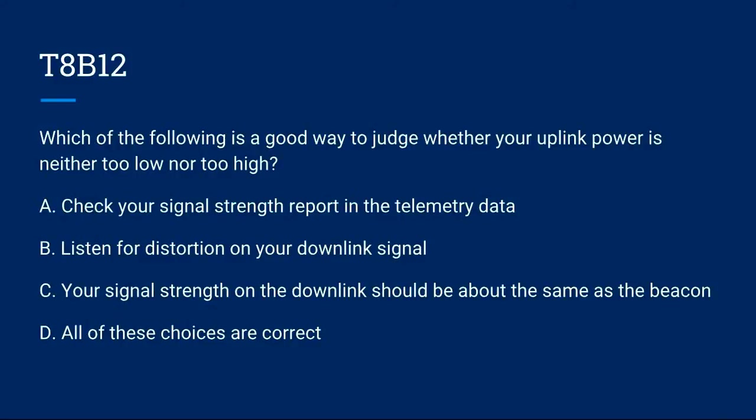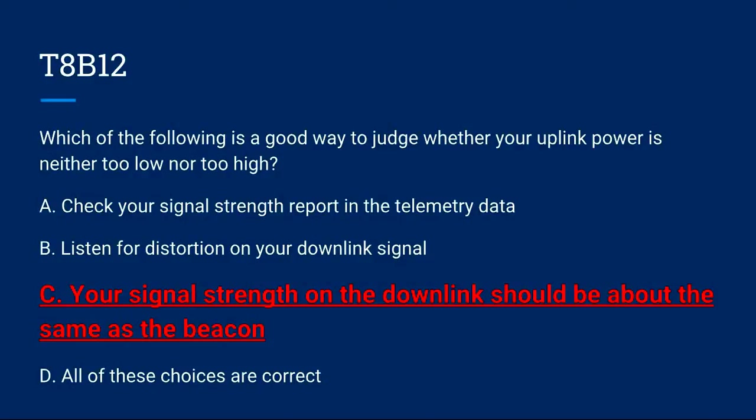T8B12: Which of the following is a good way to judge whether your uplink power is neither too low nor too high? A. Check your signal strength report in the telemetry data. B. Listen for distortion on your downlink signal. C. Your signal strength on the downlink should be about the same as the beacon. Or D. All of these choices are correct. The correct answer is C: your signal strength on the downlink should be about the same as the beacon.